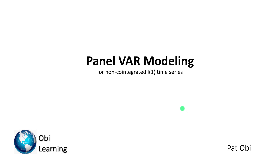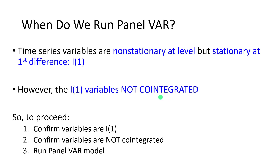This video provides a comprehensive process for estimating panel VAR. The central question at the outset is: when do we run panel vector autoregression? The answer is when working with variables that are non-stationary at level but stationary at first differences — in other words, variables integrated of the first order, or I(1).